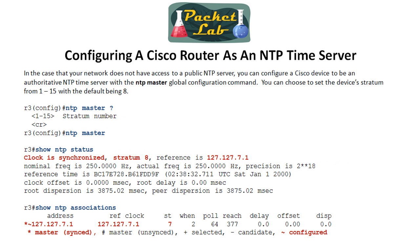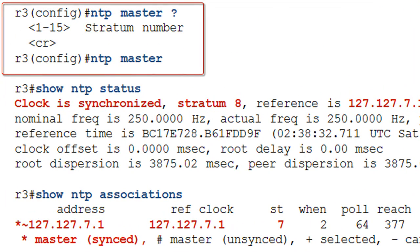If you don't have access to a public NTP server but still want synchronized time across your network, you can set up a Cisco device to act as an authoritative time source — essentially an NTP server. I would only do this as a last resort; you should prefer public NTP servers if possible. You do this using the `ntp master` global configuration command.